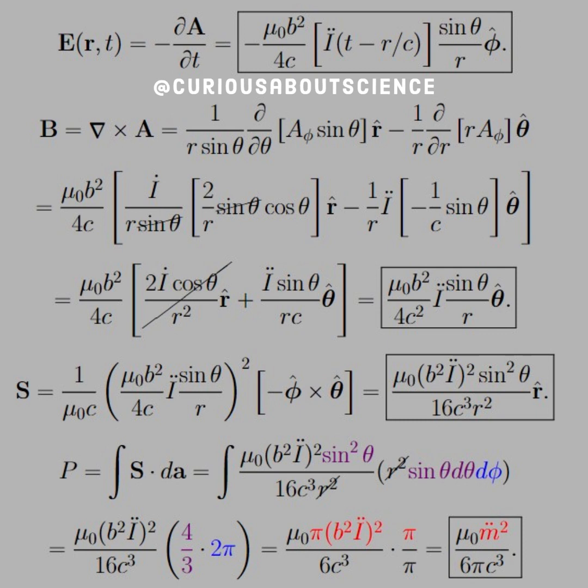So now that we have E and B, we can quickly find the S field, which is just a cross product of the two. As you see, a lot of them have similar overlaps with respect to what is a constant. Both have mu naught B squared over 4c that we need to worry about. So we have another factor of 1 over c that is on the 1 over mu naught from the original formulation of S. And then we just have negative phi hat cross theta hat, which puts us into r hat.